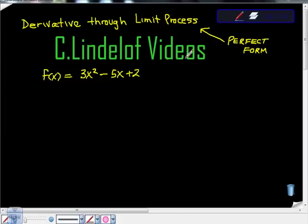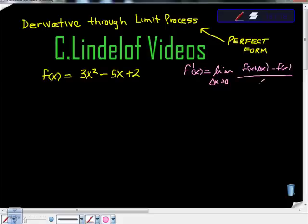Keeping in mind that we're using this limit process, f prime at x is equal to the limit as the change in x approaches 0 of f of x plus change of x minus f of x all over change of x.